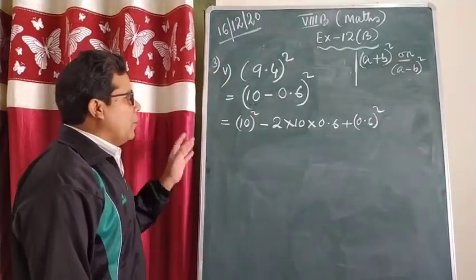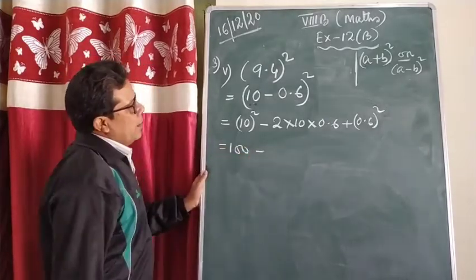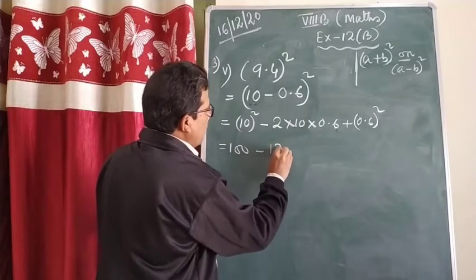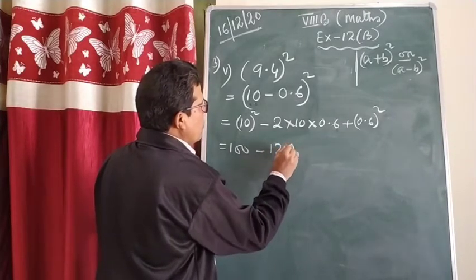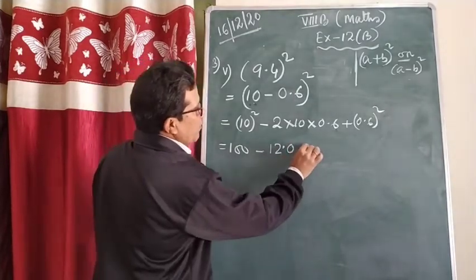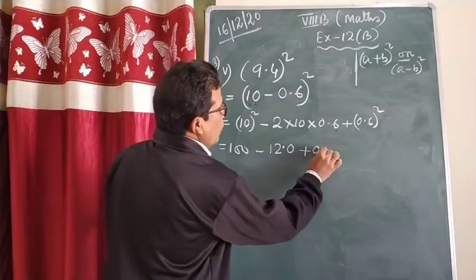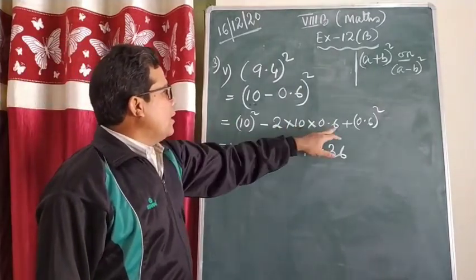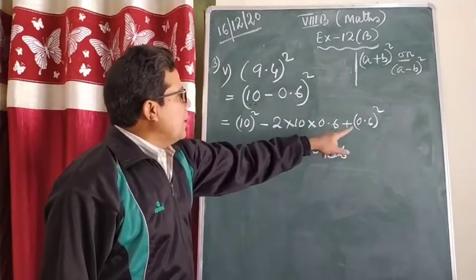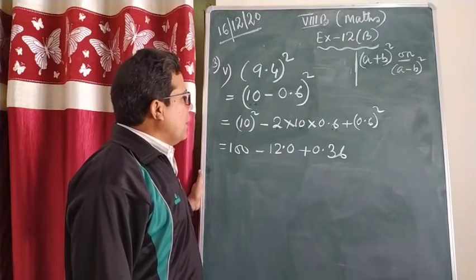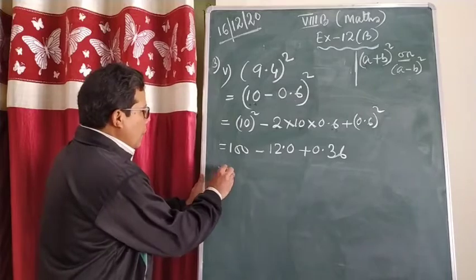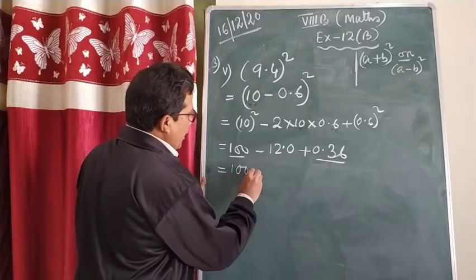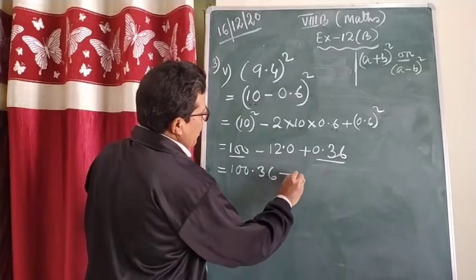So using the (a-b)² formula: 10² = 100. Then 2 × 10 × 0.6 = 120, and since decimal comes after one digit, it is 12.0. Plus 0.6 × 0.6 = 0.36. Now since these two terms are in addition, first do the addition: 100 + 0.36 = 100.36. Then subtract 12.